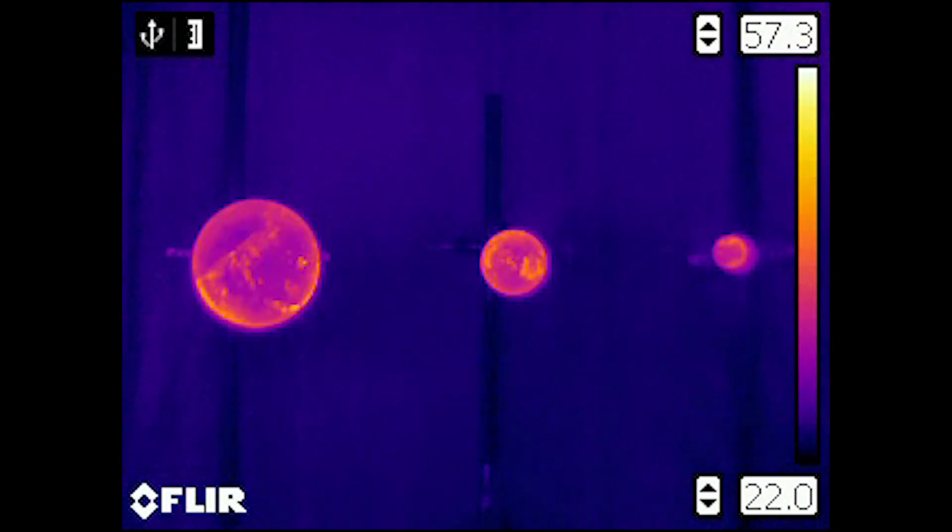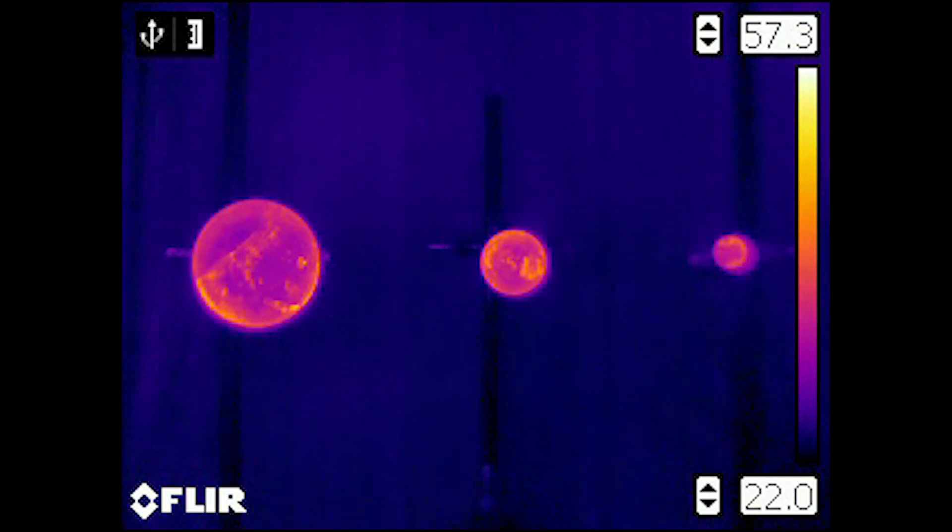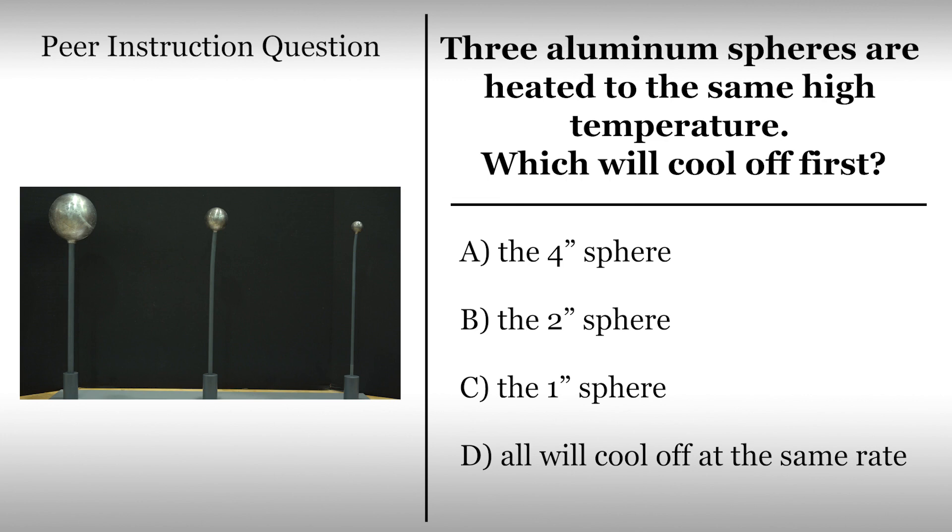We remove the spheres and look at them with an infrared camera. Note that all three spheres show up at the same high temperature as expected. Let's check your understanding with a prediction regarding what is going to happen in the demonstration. Which sphere do you expect will cool off first? Classroom students should follow normal procedures or instructor guidelines. Viewers not in a classroom should record your vote and explain your reasoning on a piece of paper. Please pause this video and answer the question.